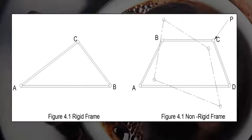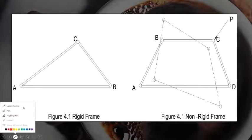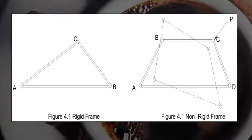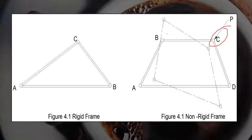As you can see in the figure, we have two different types of frames. For the rigid frame, the joints are connected by pin or rivet. Then you have the unrigid frame, by which under the application of a load it changes or transforms its shape.